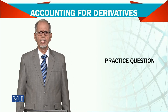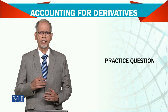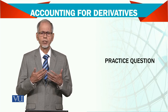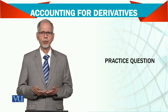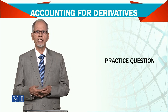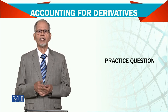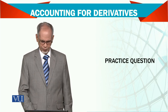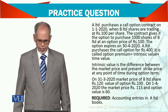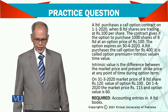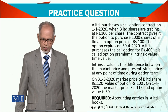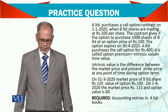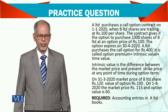The change in options is how to adjust the options. The option that you have created has a price. The market-based share fluctuation is how to change the options. A Limited purchases a call option contract on 1st of January 2020, when B Limited shares are traded at Rs. 100 per share.